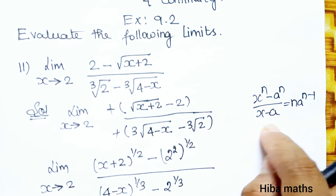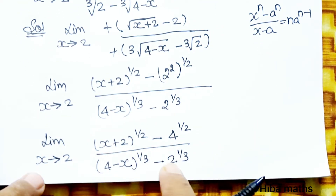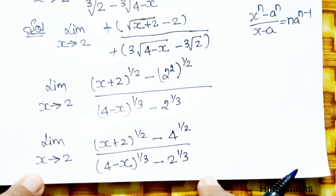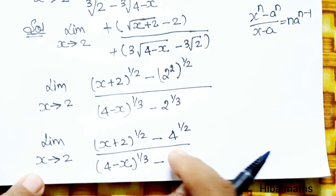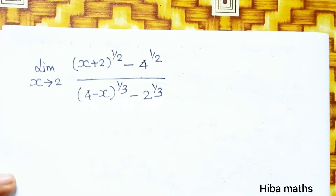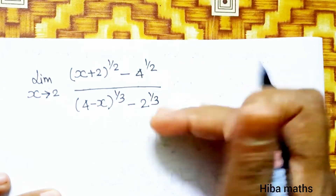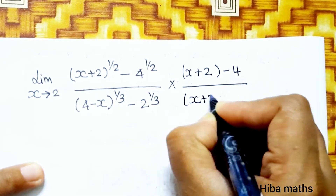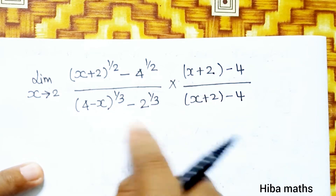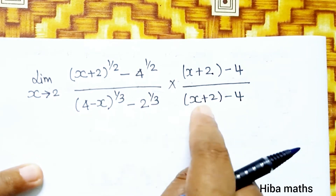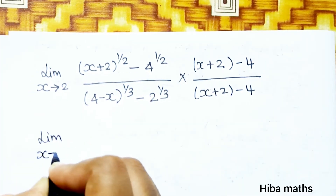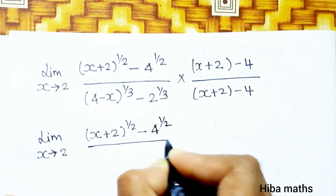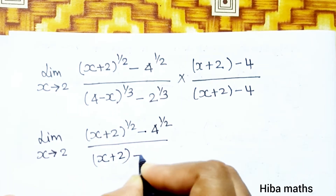Now, to apply the x power n minus a power n format, we need an x minus a factor. We multiply numerator and denominator by (x plus 2 minus 4). Rearranging the denominator to this side, with the factor (x plus 2 minus 4) on both numerator and denominator.